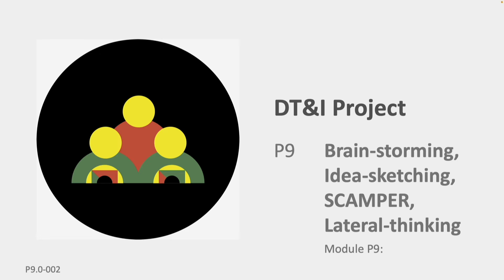We are going to be doing what we just studied in the tool section — the 4 methods for ideation: brainstorming followed by idea sketching, then use of the SCAMPER techniques, and then lateral thinking. The idea is that you get a lot of ideas, visualize them in the form of sketching, and then put it all together.